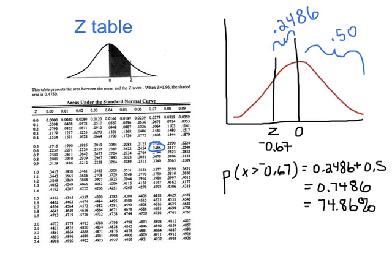74.86% of the scores are higher than this z-score. Since this z-score represented Hitler's height of 5'8", the conclusion is that 74.86% of men in the U.S. are taller than Hitler. That's how you use a z-score to understand the probability of other scores being either above or below your particular score.